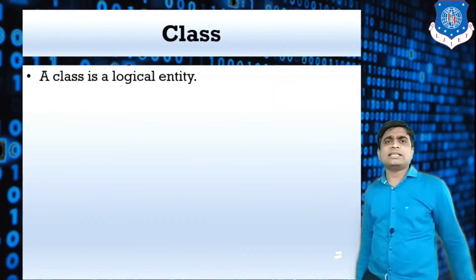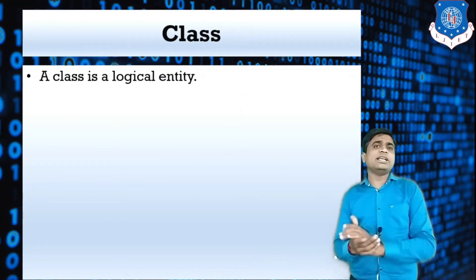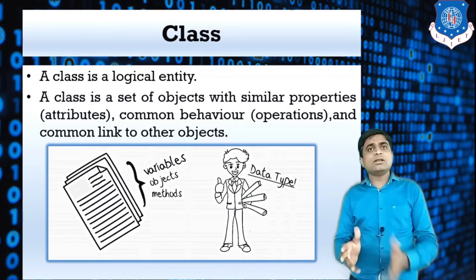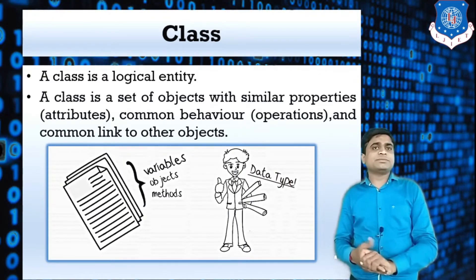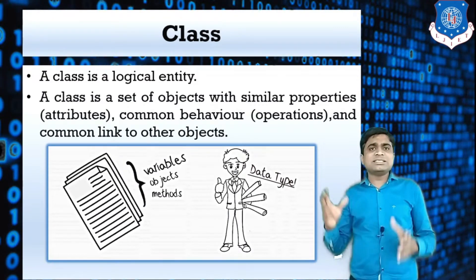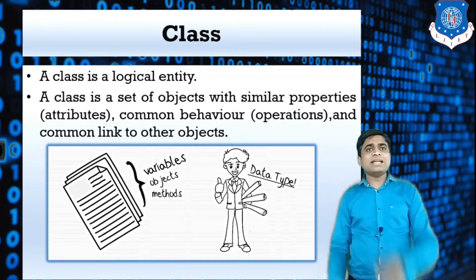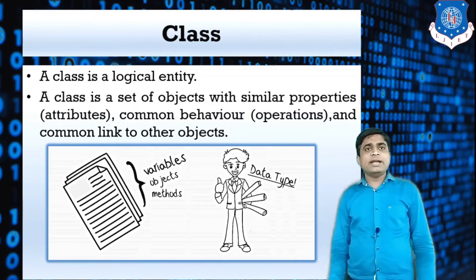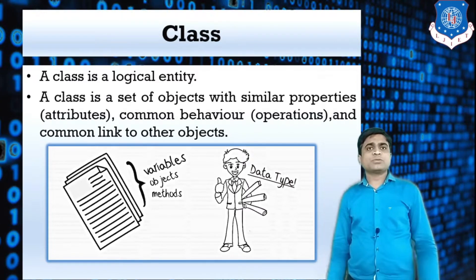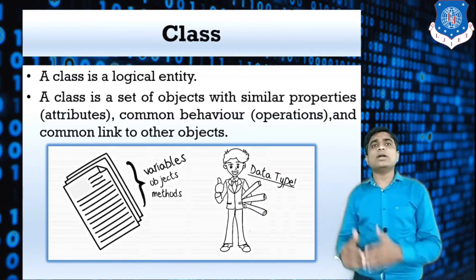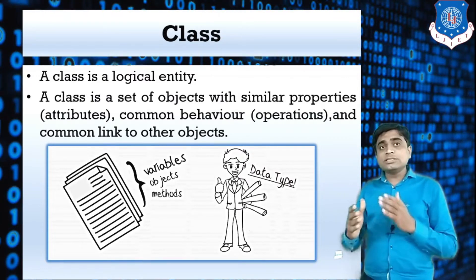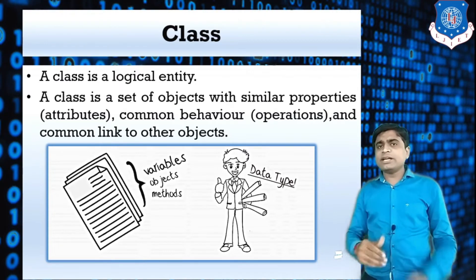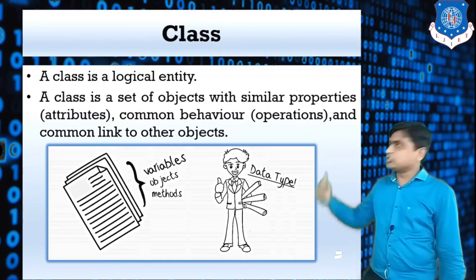Now, what do you mean by a class? A class is a logical entity — it is nothing but a collection of variables, objects, and methods. A class is a set of objects with similar properties and common behavior and common links to other objects. Basically, a class is also called a collection of objects.